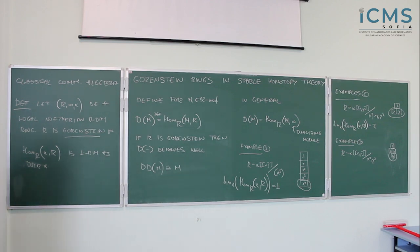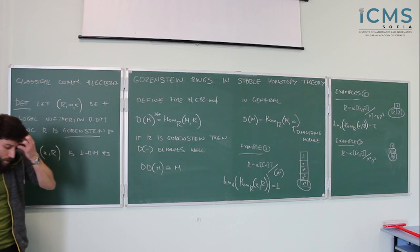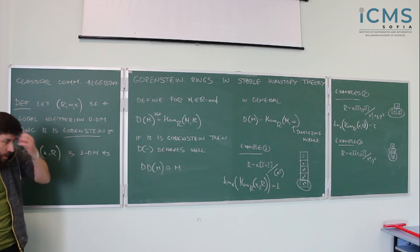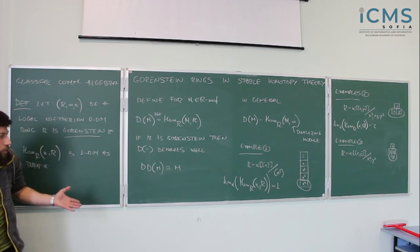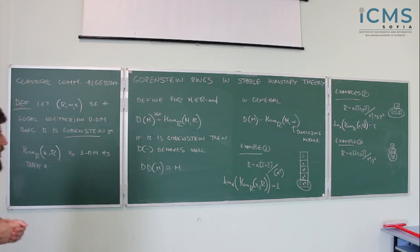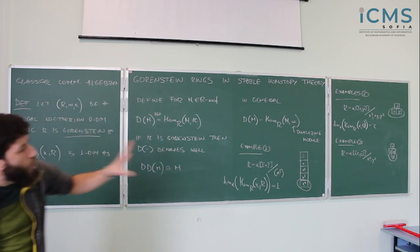The Gorenstein property is, at least for me, a bit more unintuitive than, say, regularity or Cohen-Macaulay. You take a ring, stare at it, and it's kind of hard to say whether it's Gorenstein or not. There's also not that much geometric intuition behind it — at least for me — but that's one way you could see it.